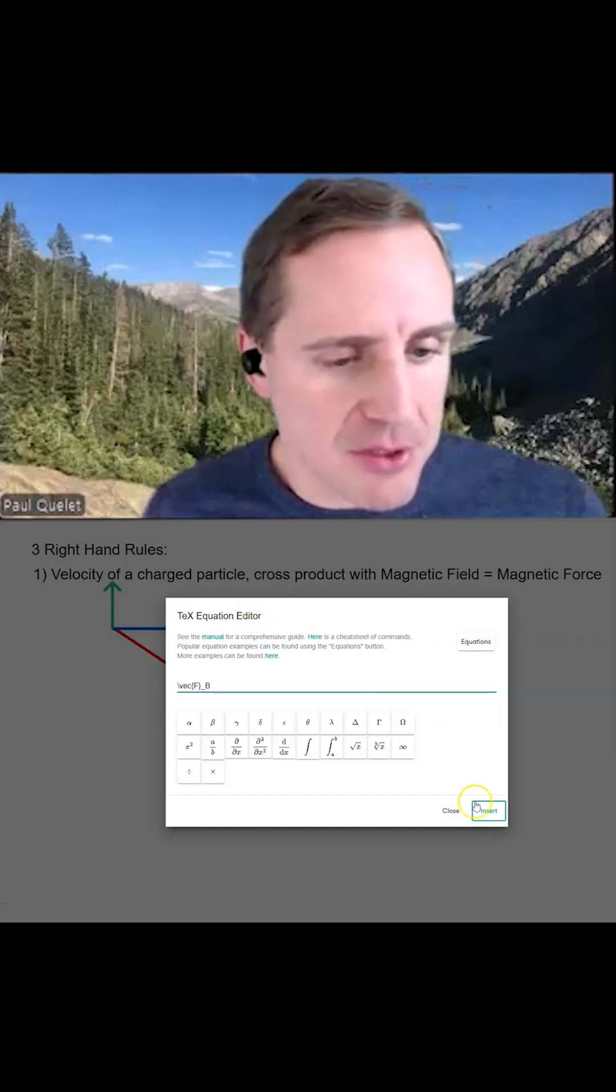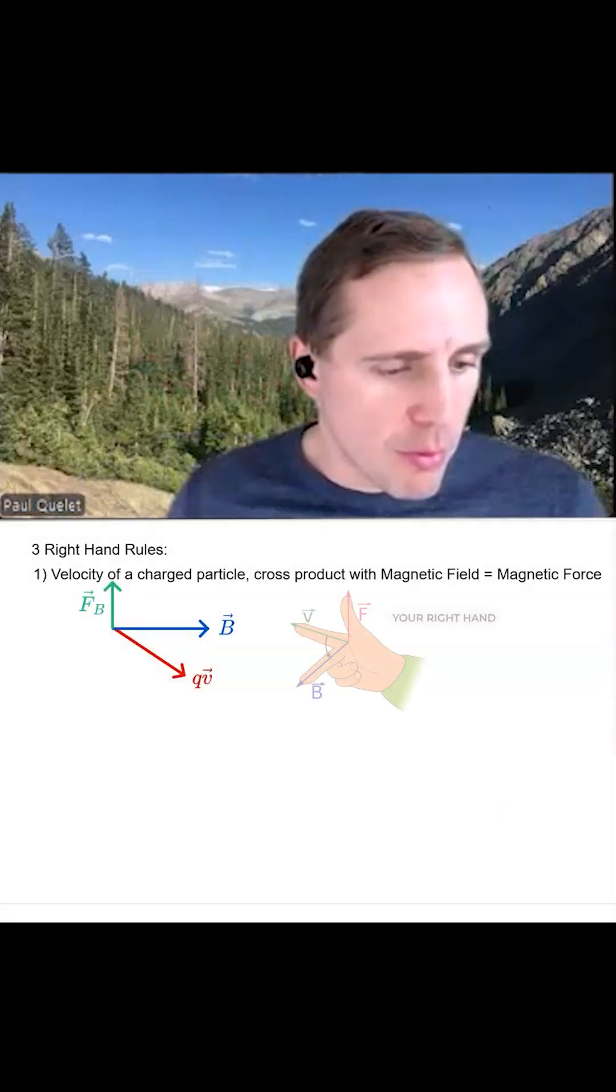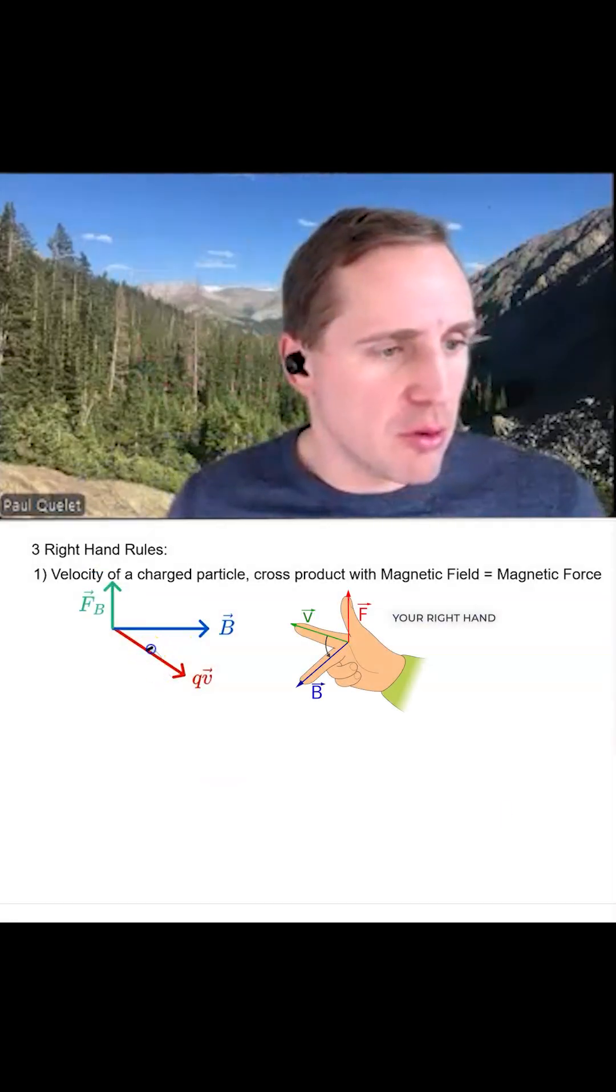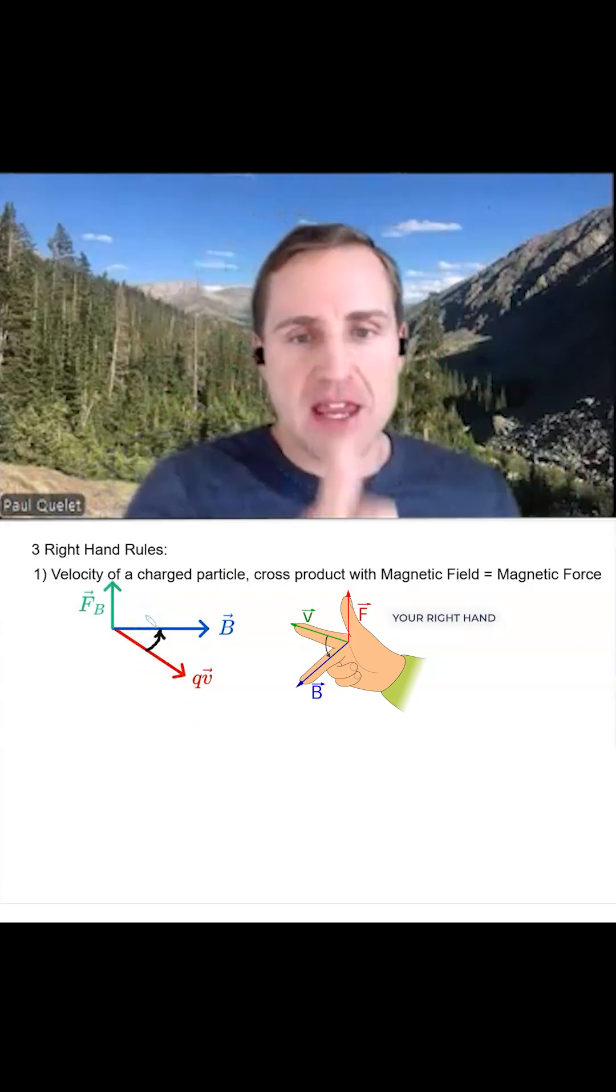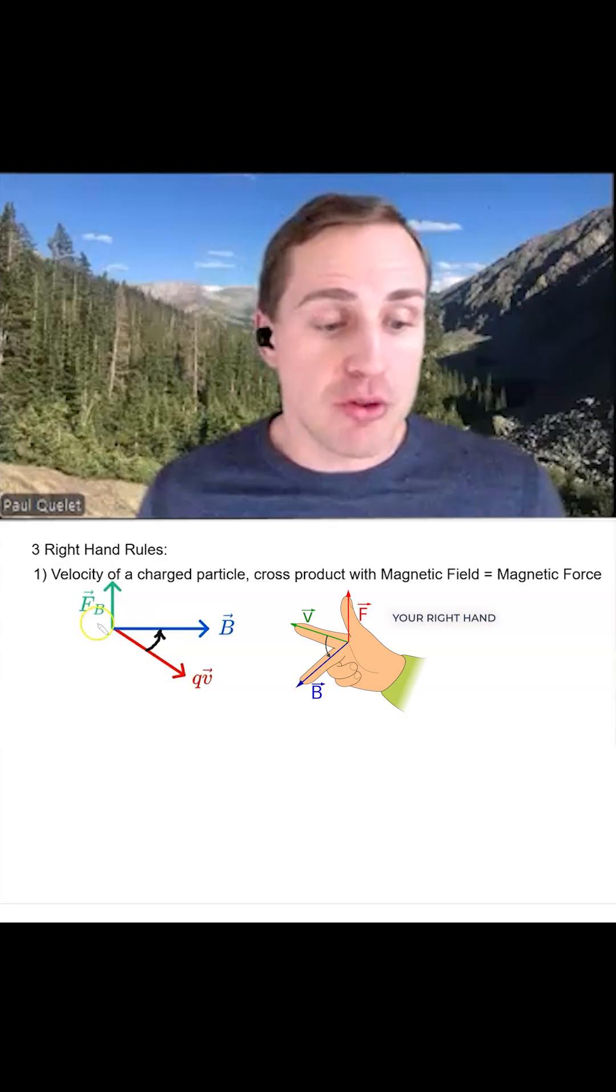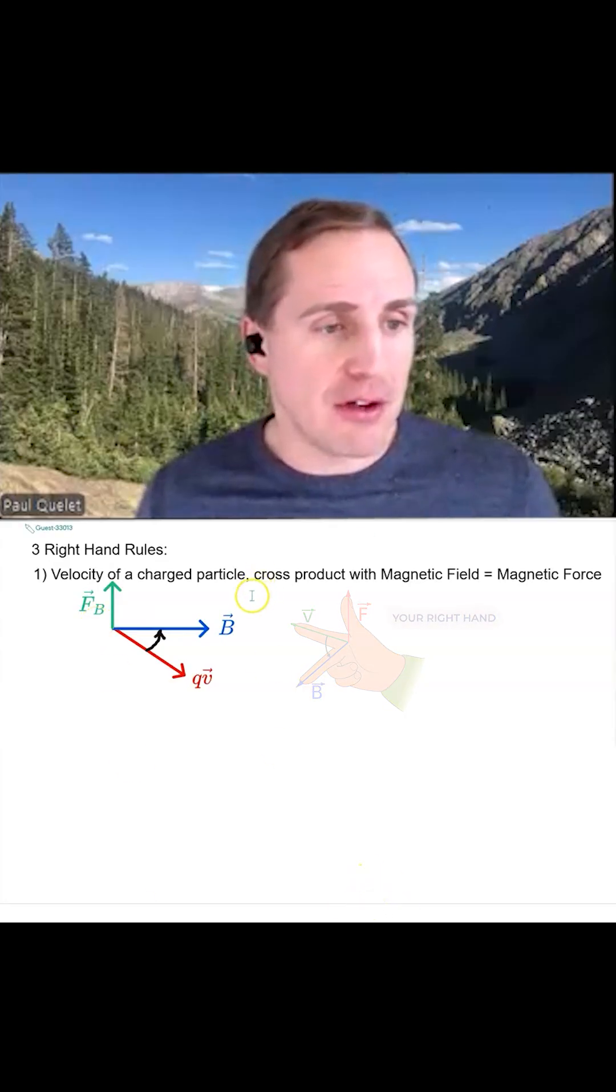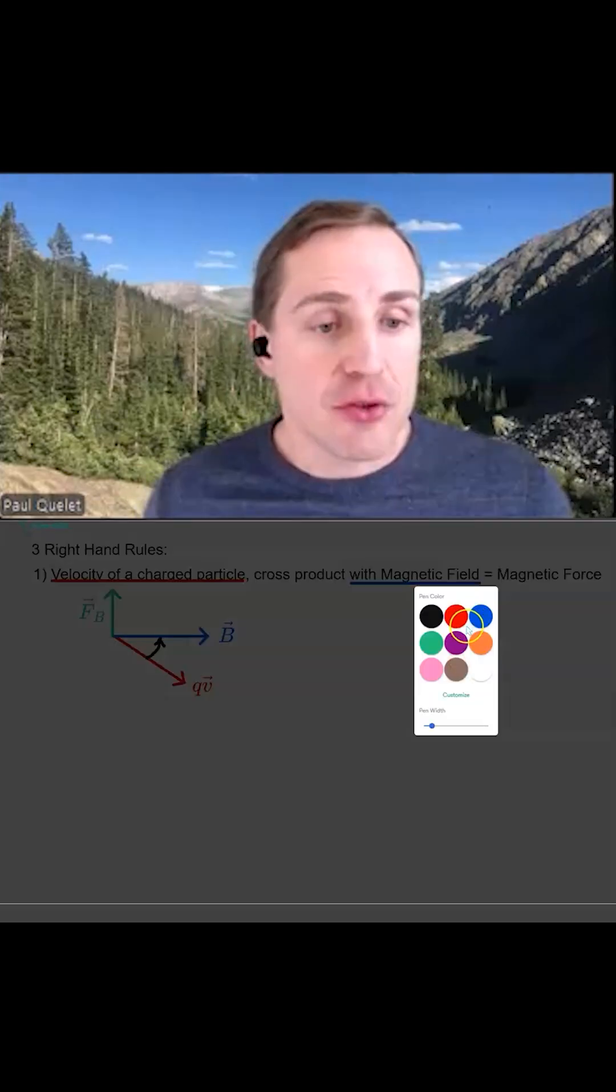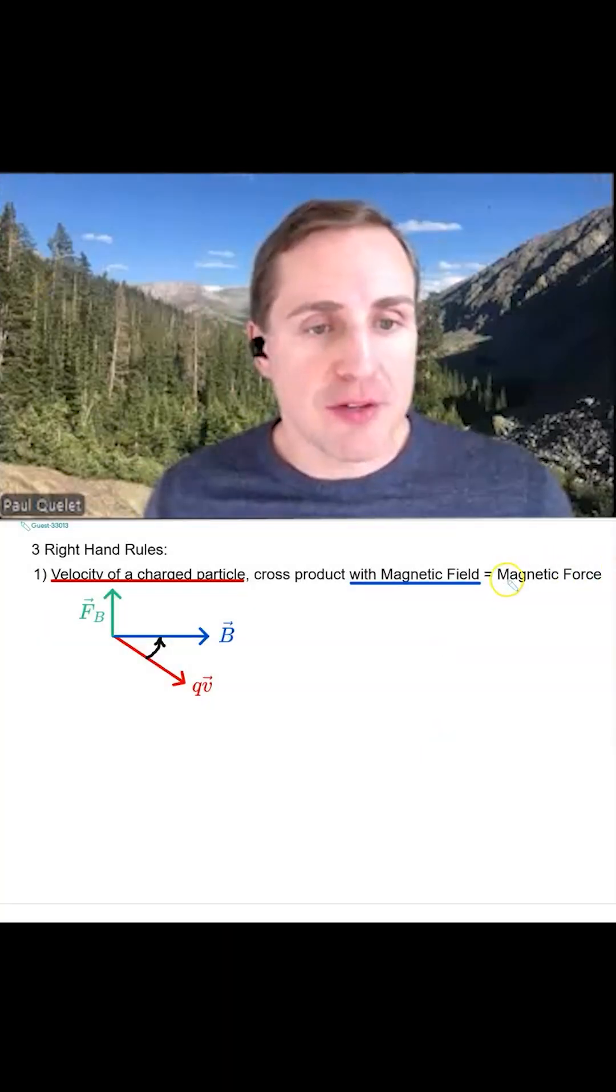Remember the magnetic force is sometimes called the Lorentz force. What we're going to do is we're going to cross product qv into b and the thumb points in the direction of the magnetic force. So this is when you have a charged particle moving through a magnetic field, the magnetic force. This requires the use of the right hand rule.